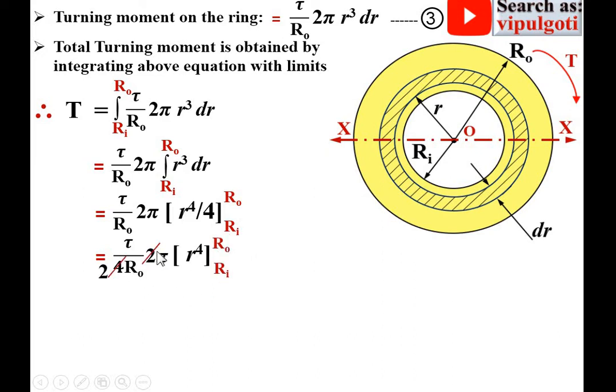Now with further simplification, 2 into 4, the remaining term is πτ/(2Ro)·[Ro⁴ - RI⁴], which is equation number 4.